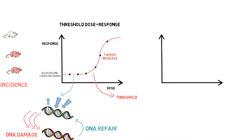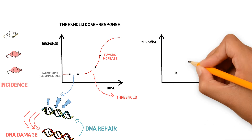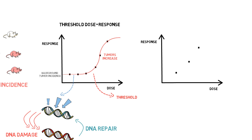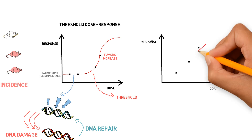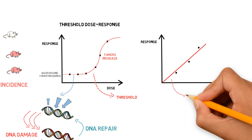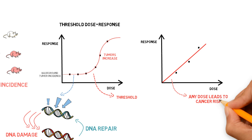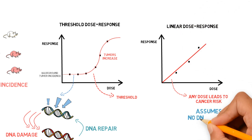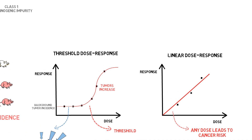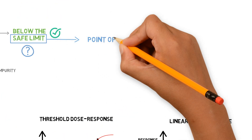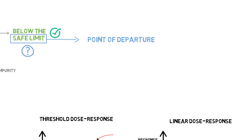Now, what if we don't clearly see this dose-response curve in our study? In this case, the recommended approach for mutagenic impurities has been to consider the dose-response as linear — as if any dose leads to cancer risk and there is no threshold. Here, there is an assumption that we don't have DNA repair mechanisms in place, so which one of these will be used to find the point of departure to derive the safe limit for humans?